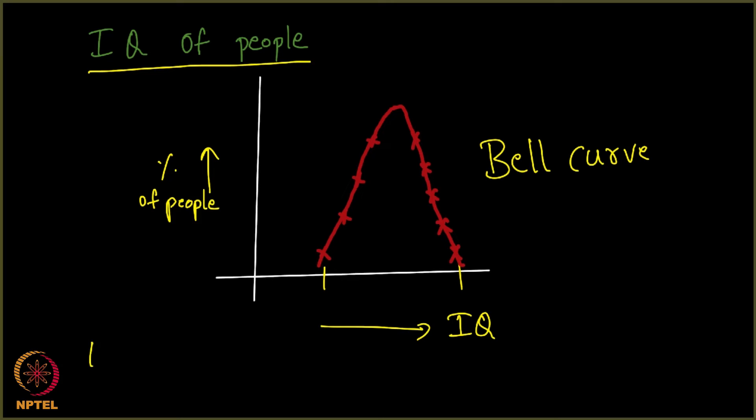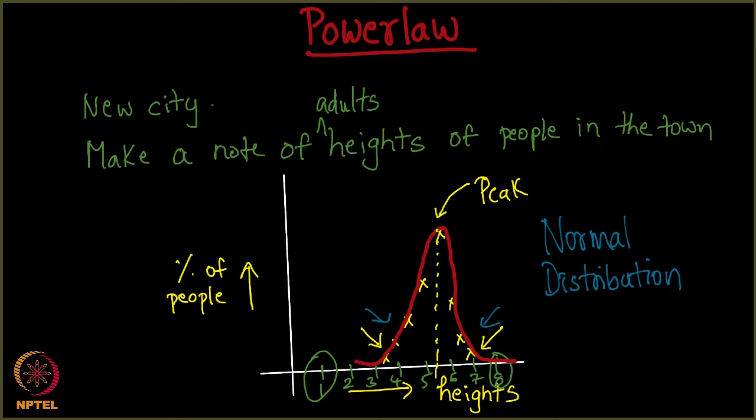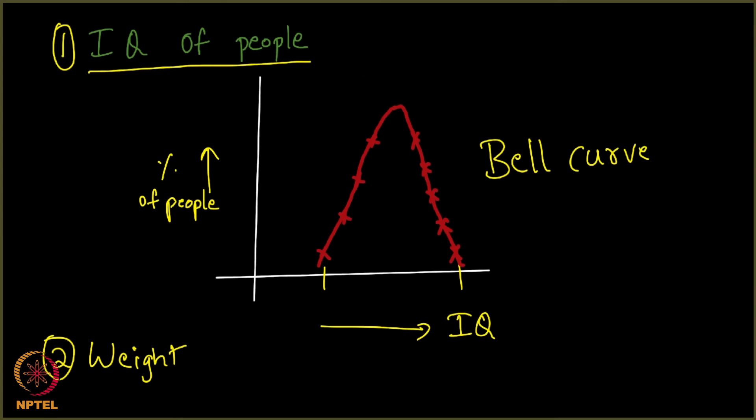Weight of people in a town, weight is another such example, IQ being one such example, height being another example, right? So, let us look at an example which is very specific to our work, to our subject and that's going to be networks. So, if I, what do we observe? What do we observe? If we were to take a network and try to ask the degree distribution in the network? Degree distribution. What do you even mean by this?